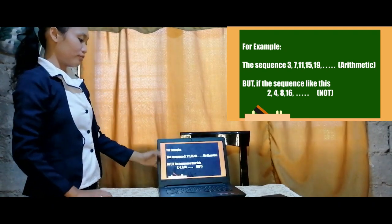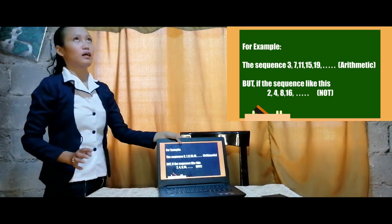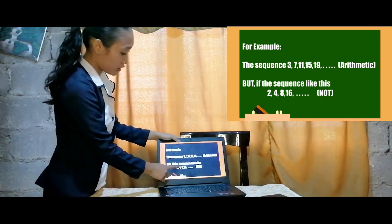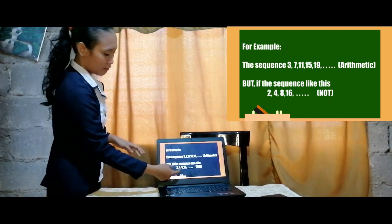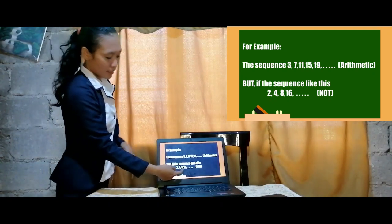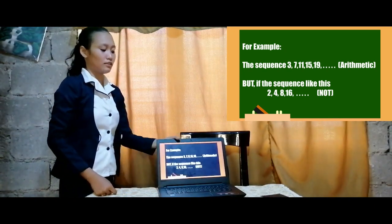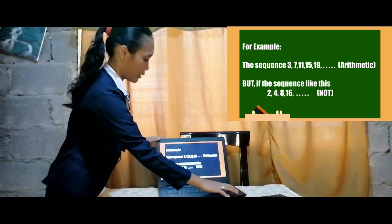But if this sequence like this: 2, 4, 8, 16. Let's just subtract. 4 minus 2 is 2, 8 minus 4 is 4. As you can see, the difference of this one is 2 and the difference of this one is 4. The common difference is not constant. Therefore, we can say that this sequence is not an arithmetic sequence.